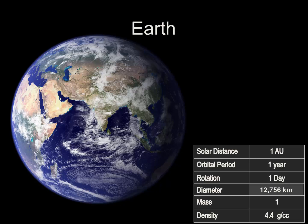Our rotation? Technically our rotation is 23 hours and 56 minutes, but one day will serve for now. The diameter of planet Earth? It's a little wider at the equator than it is from pole to pole, but the equatorial diameter of the Earth is 12,756 kilometers. For the purpose of this video, we're going to call that 1, so we can compare other planets to the size of planet Earth. The Earth has a mass of 5.9 times 10 to the 24 kilograms, but for purposes of this discussion, we're going to call our mass 1.